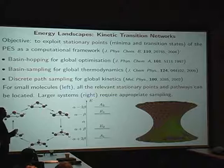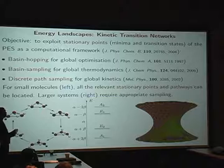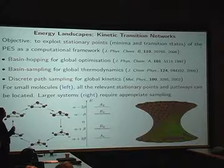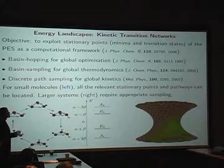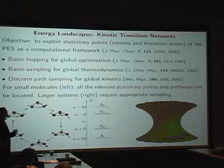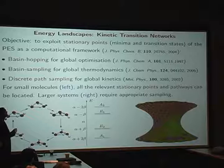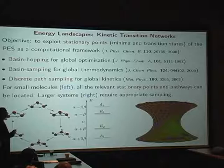I'm going to talk about energy landscapes, and particularly the kinetic transition network aspect. Our objective, my objective, is always to use stationary points, minima and transition states of this potential energy surface as both a conceptual and a computational tool. So Dagesh just explained minima and transition states in the context of the Thomson problem. This provides us with a coarse graining straight off the bat and a conceptual way to think about problems, but also to develop novel algorithms for solving them numerically.